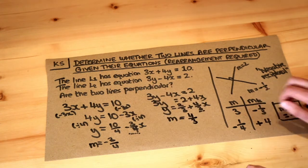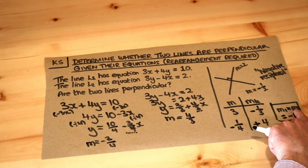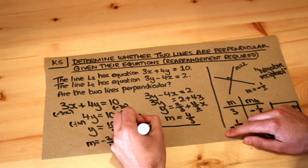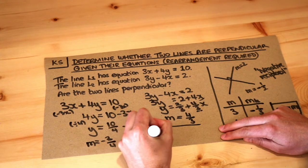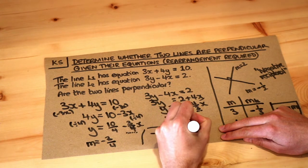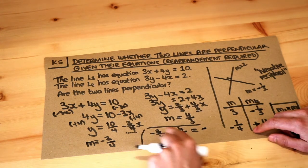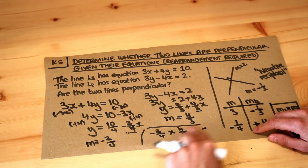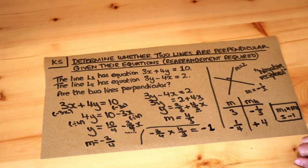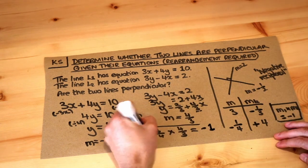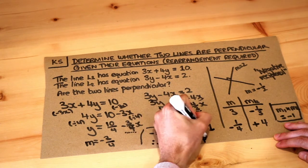And then to see whether these two lines are perpendicular, we can use this fact here. Do the two gradients multiply to give -1? So if we try that—I'm running out of space—we do -3/4 × 4/3. Now negative times positive is negative. And if we do 3/4 × 4/3, we get 3 × 4 at the top, which is 12, and 4 × 3 at the bottom, which is 12. 12/12 is just 1. So we do indeed get -1, and therefore the lines are perpendicular. If it wasn't -1, then they're not perpendicular.